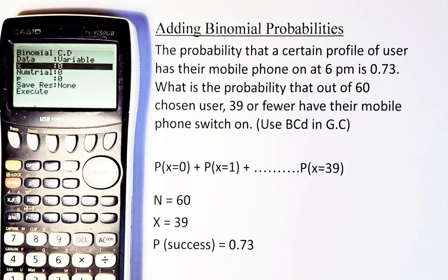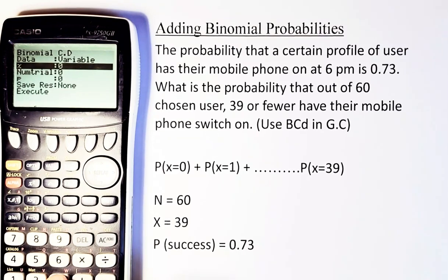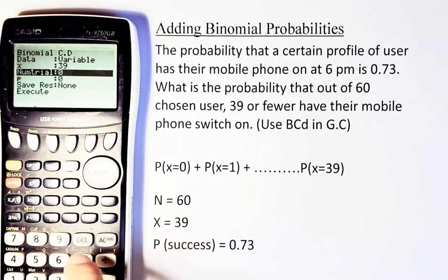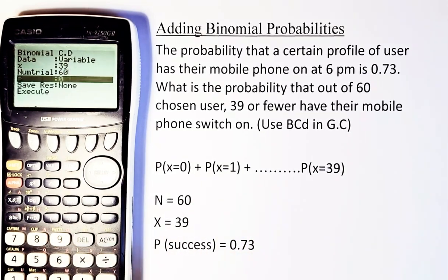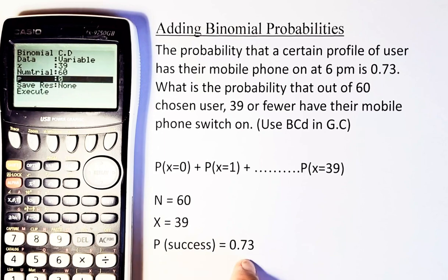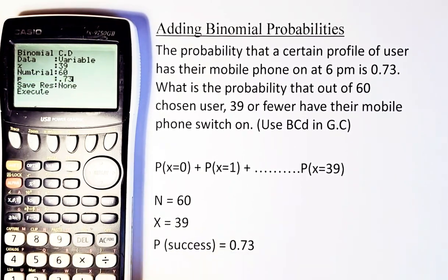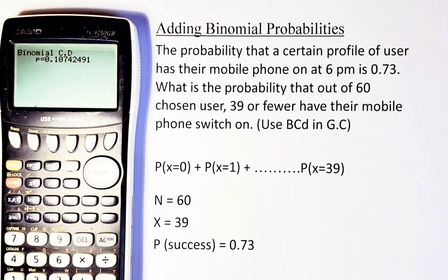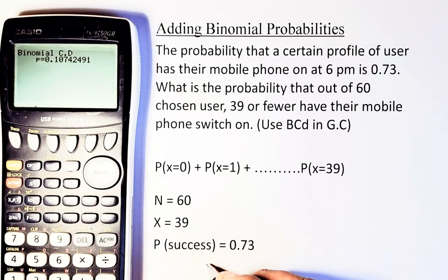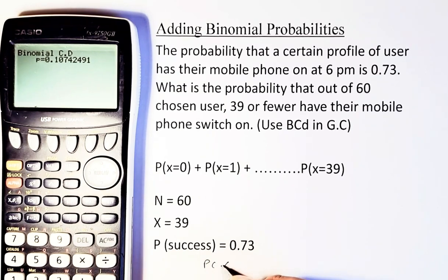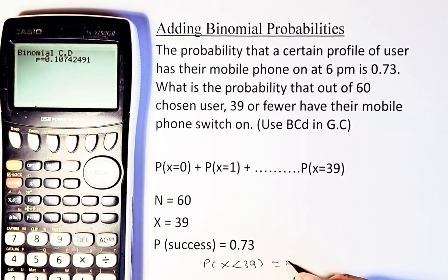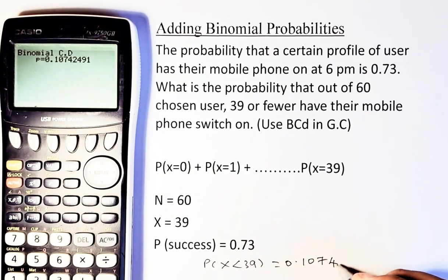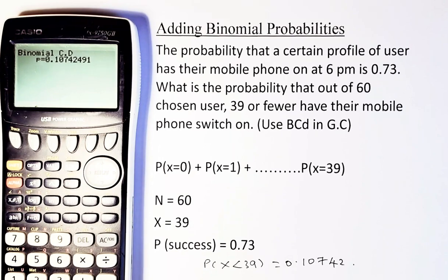X is 39 because you are calculating from 0 to 39, you accumulate from 0 to 39, so you stop at 39, so X is 39. Now your number of trials, there are 60 people, so 60 is the N, execute, and then your success is 0.73, and then you just click execute, execute, and the answer will come up to 0.107. So the answer, the probability of less than 39 users is going to be 0.10742, and that will be another achievement in your NCEA Level 3.